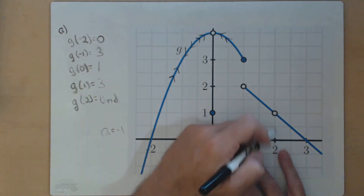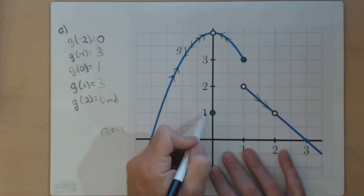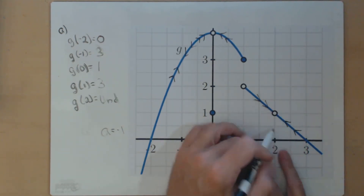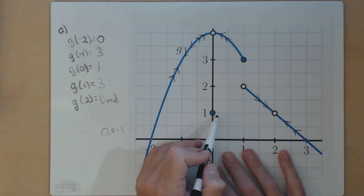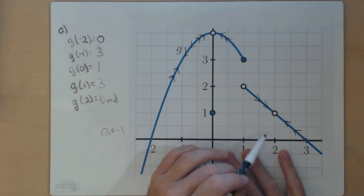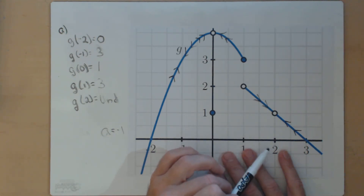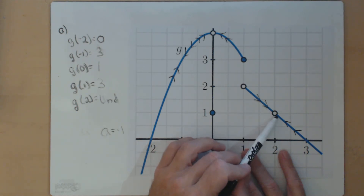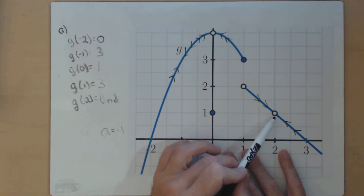The last one is as we approach 2. As we go into 2 from the left, we go towards 1 in the y's. And as we head towards 2 from the right, we head towards 1 in the y's. So as x gets closer and closer to 2, g of x gets closer and closer to 1, or as close as we want to 1. Even though g of 2 is not equal to 1, the limit is going to be 1.